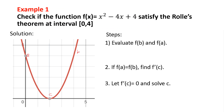Check if the function f(x) = x² - 4x + 4 satisfies Rolle's Theorem on the interval [0, 4]. So your a is 0, your b is 4, and we need to find the point c. Evaluate.